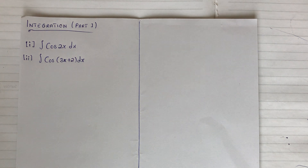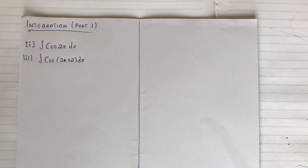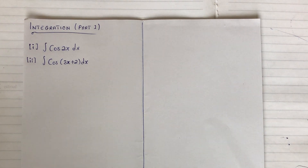Hi, I have here integration part 1. I'll be taking different examples and I'll label them accordingly. So I have here integral of cos(2x) dx and then integral of cos(3x + 2) dx. When we see something like this, how do we go about them? I have done a video under introduction to integration. Kindly subscribe to this channel for more updates. So let's see the first one.